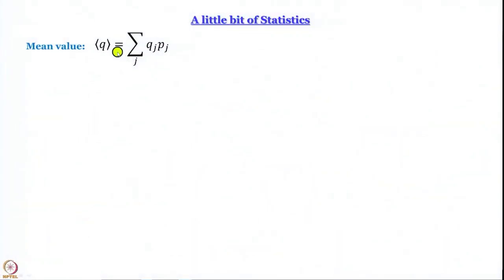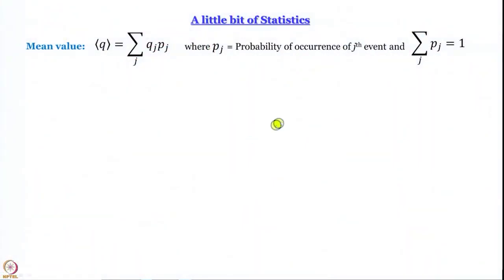Probability is nⱼ divided by Σⱼ nⱼ, where nⱼ is the number of occurrences of the jth event and Σⱼ nⱼ is the total number of measurements. So the average value ⟨q⟩ = Σⱼ qⱼ·pⱼ — exactly the same thing we learned in school. If in some measurement I get 5 three times, 7 twice, and 2 once, the average is computed by multiplying each value by its occurrences, summing, and dividing by total occurrences. Of course Σⱼ pⱼ = 1; total probability must equal 1.